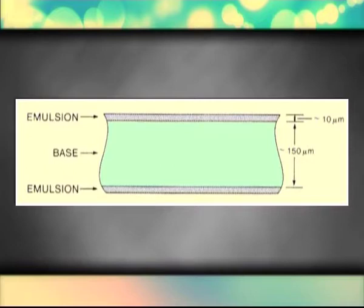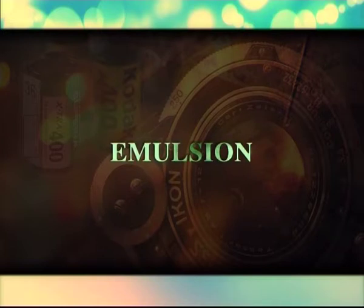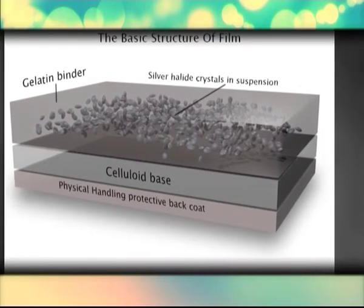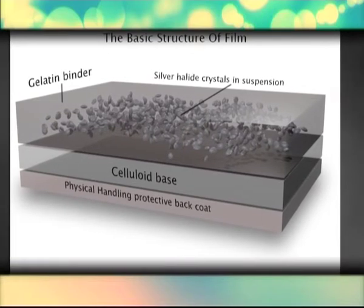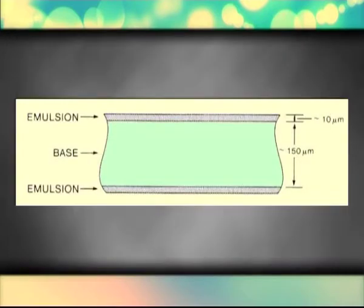The base of a typical radiographic film is made of a clear polyester material about 150 µm thick. It provides the physical support for the other film components and does not participate in the image forming process. In some films, the base contains a light blue dye to give the image a more pleasing appearance when illuminated on a view box. The emulsion is the active component in which the image is formed and consists of many small silver halide crystals suspended in gelatin; the gelatin supports, separates, and protects the crystals. The typical emulsion is approximately 10 µm thick.